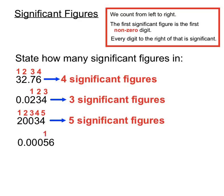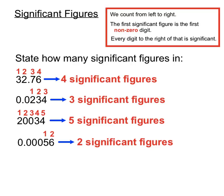In this last example, we'd only start counting our significant figures when we hit the first non-zero digit, and that's the five. So working from left to right, we start counting on the five, and then one more digit gives us a total of two significant figures altogether.